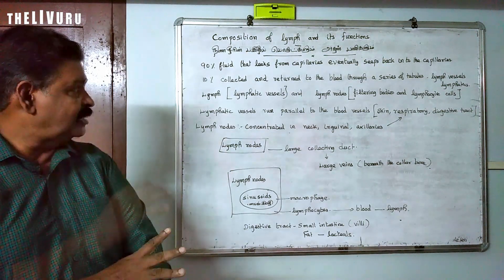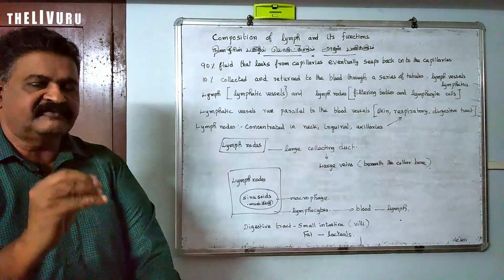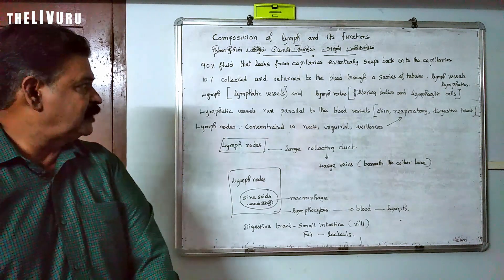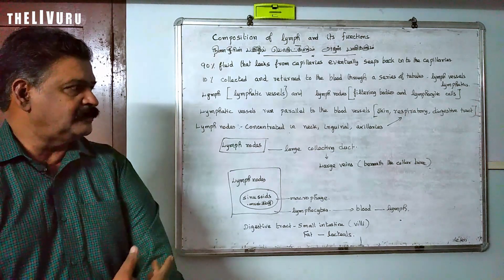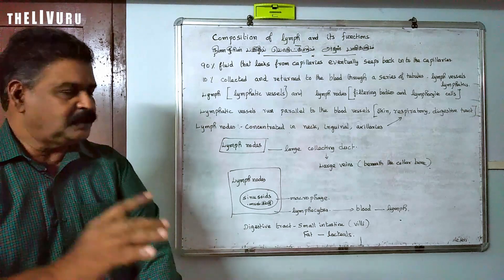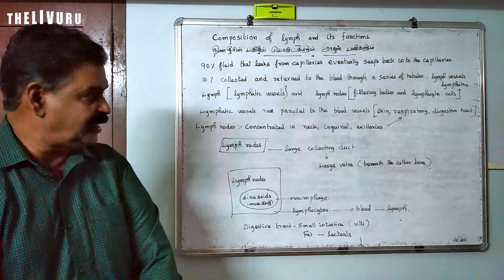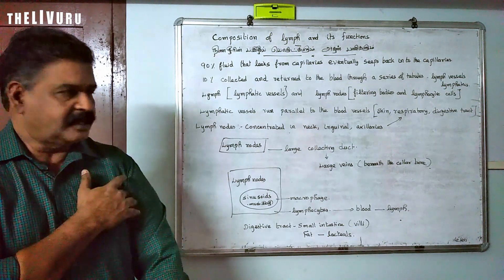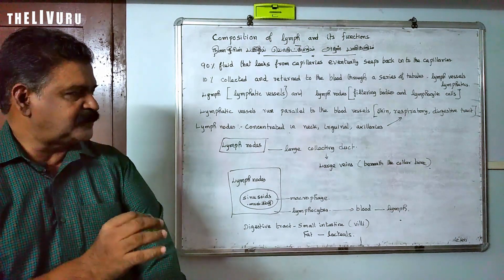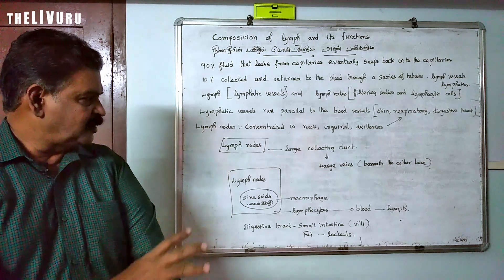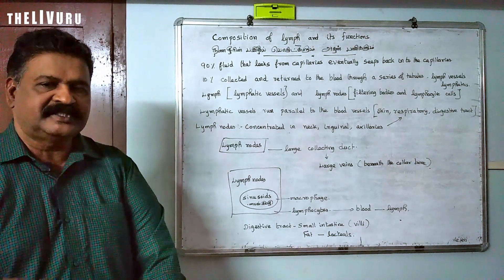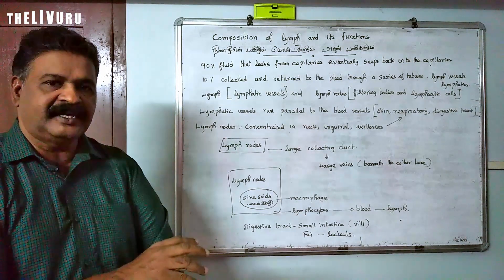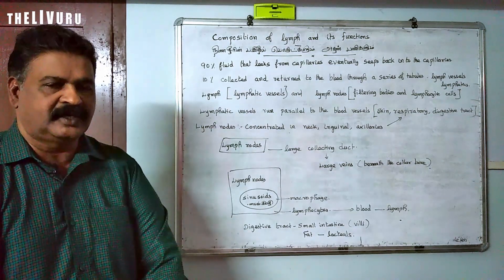Lymph nodes contain lymphocytes and are formed throughout the lymphatic system. They are found in the skin, respiratory system, and digestive system. You can see that lymph nodes filter the pathogens and destroy them. See our next video.